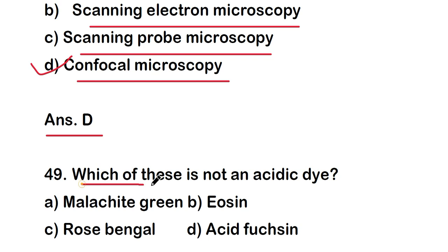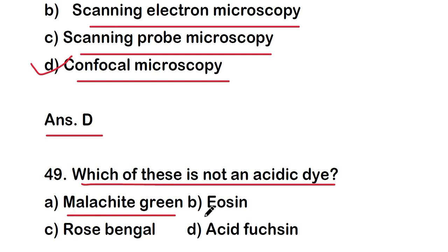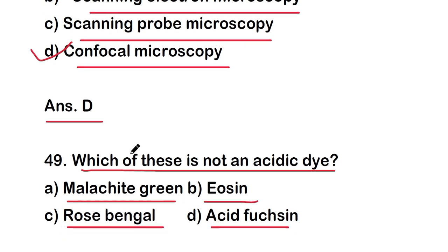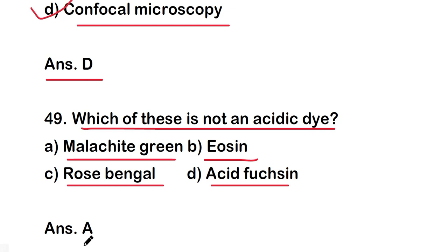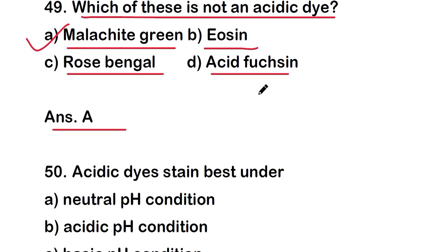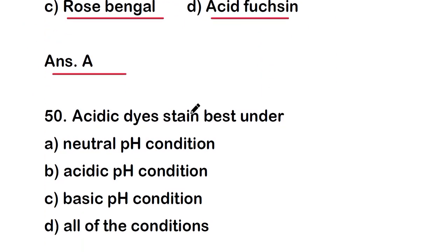The study of biofilms can be done using the technique of confocal microscopy. Next question: which of these is not an acidic dye? Options are: malachite green, eosin, rose bengal, or acid fuchsin. The right answer is option A — malachite green is not an acidic dye.